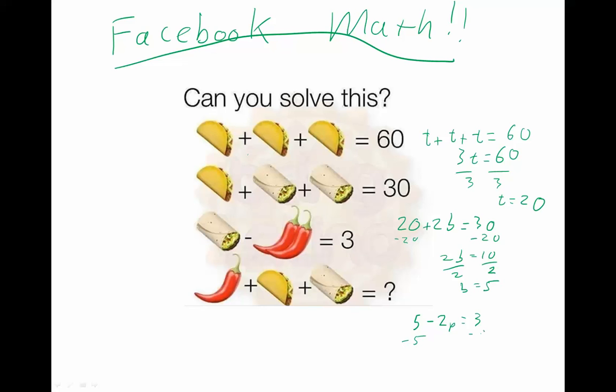Now, subtracting 5 from both sides here, we get negative 2p equals negative 2. And dividing by negative 2, we have p equaling 1.